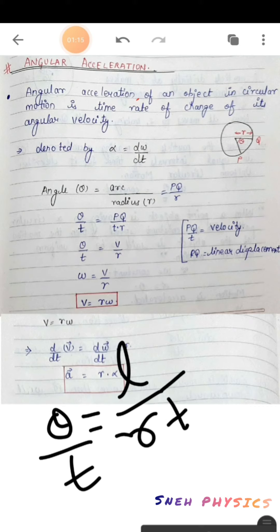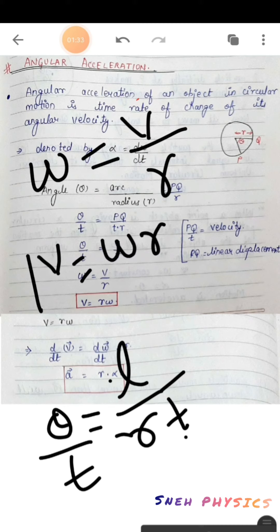Theta by t is angular velocity, and distance per unit time is given by linear velocity, with r in the denominator. So what we are finally getting is v equals omega r. This expression gives the relation between linear velocity and angular velocity.